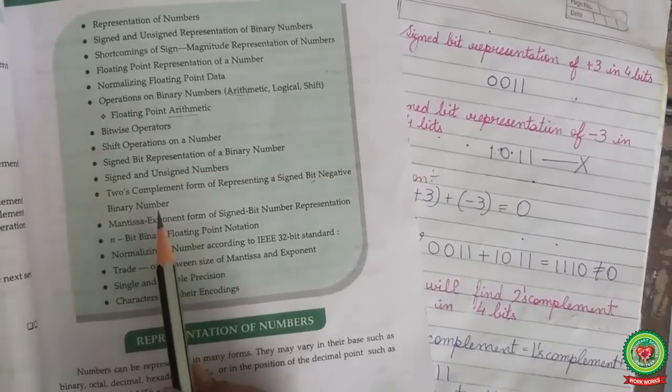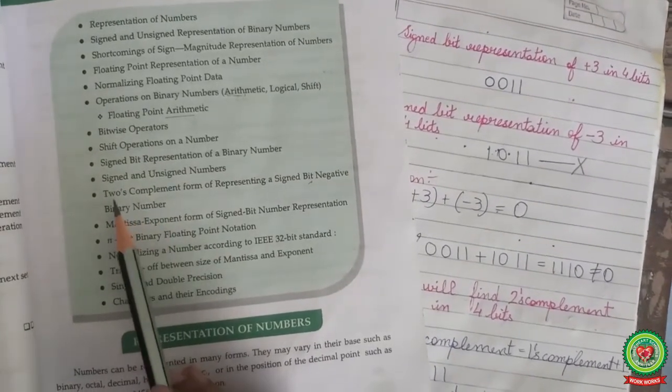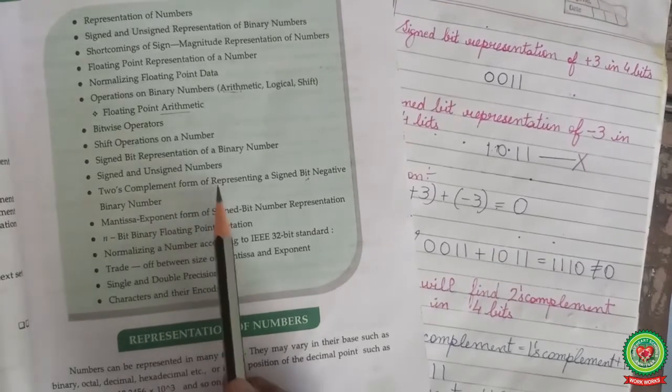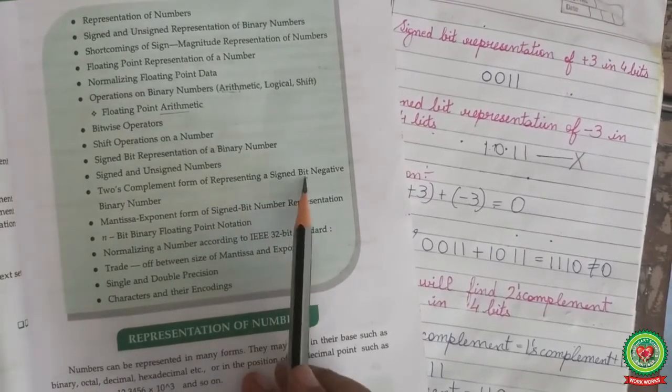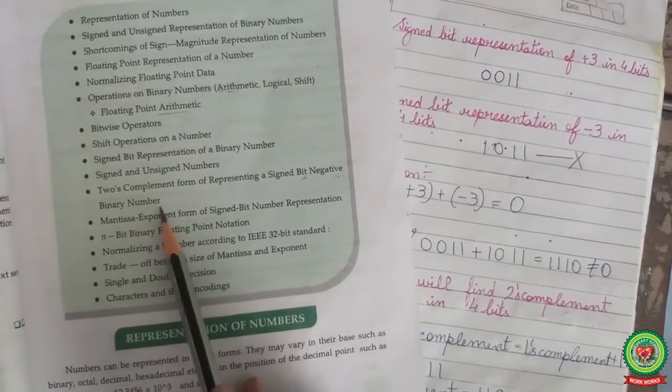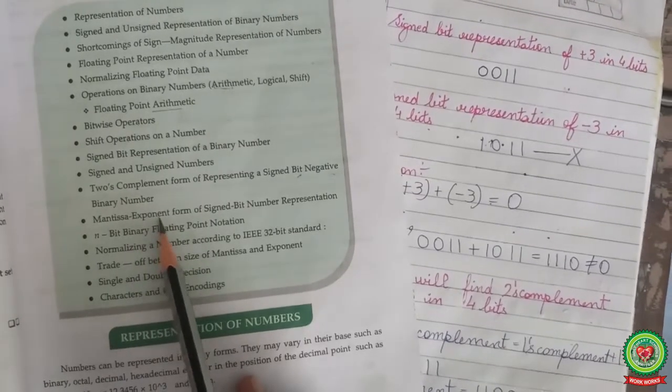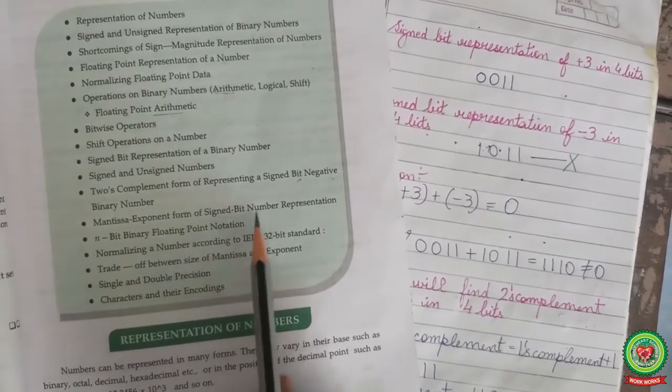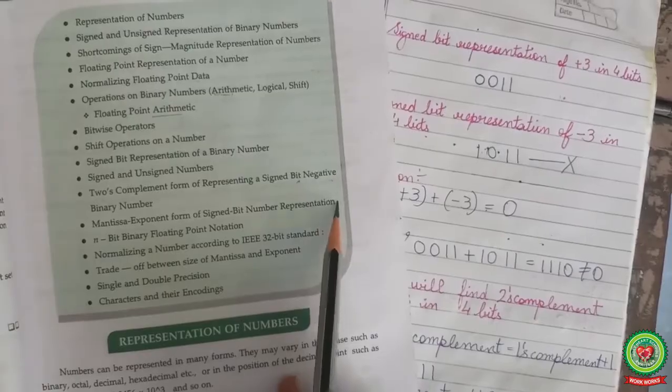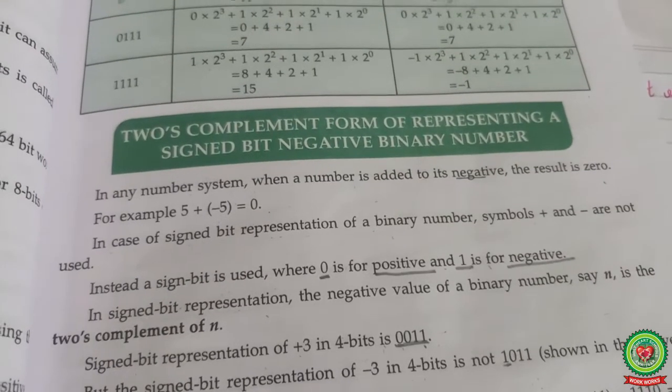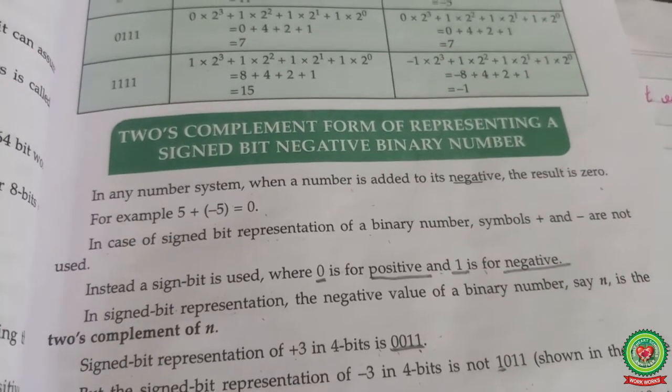The objectives of my today's topic are you will learn two's complement form of representing a signed bit negative binary number and mantissa exponent form of signed bit number representation. Students please open your book at page number 71.